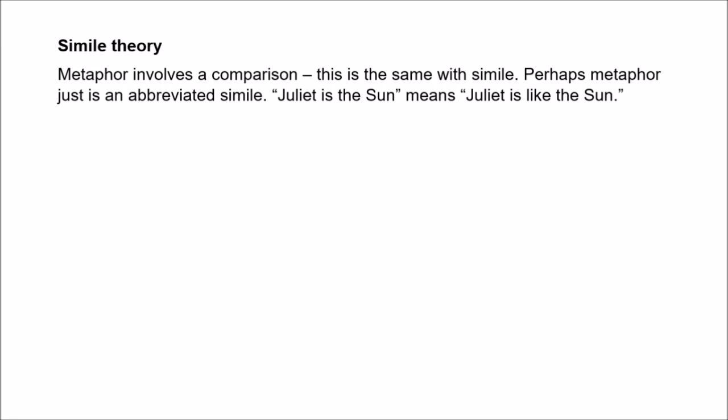Perhaps the simplest account of metaphor is the simile theory. Notice that metaphor involves a kind of comparison of one thing with another — 'Juliet is the sun' in some sense compares Juliet with the sun. This is a feature that metaphor shares with simile. In simile, the comparison is made explicit, and this has prompted the thought that metaphor is simply an abbreviated simile. So what is figuratively expressed by 'Juliet is the sun' is the simile 'Juliet is like the sun.' In general, A is B just means A is like B. The truth of the metaphor is then just a matter of the truth of the simile. Similes can be understood literally, so the metaphorical meaning is straightforwardly explained.